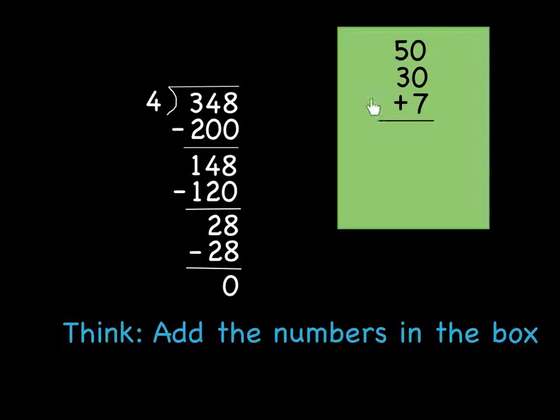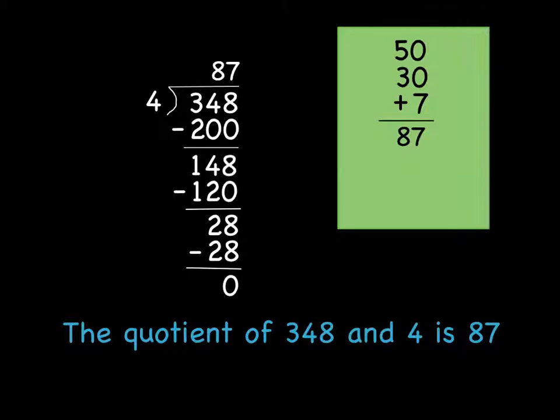Add up the numbers in the box. This time there's 3 of them. And you get 87. That's because, just like last time, the quotient of 348 divided by 4 is 87. The difference is, last time they realized that 50 and 30 equals 80. That gave them the 320. This time they got 200 and 120. Not a problem. You're always going to get the right answer either way.